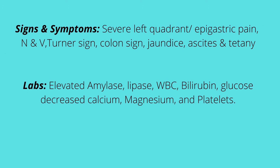Signs and symptoms include severe left quadrant pain or epigastric pain, which could radiate to the back or even the left shoulder. We could also note nausea and vomiting. Turner's sign could also be a possibility, which is ecchymosis of the flanks. We could also see Cullen's sign, which is a blue-gray discoloration of the umbilicus or belly button.